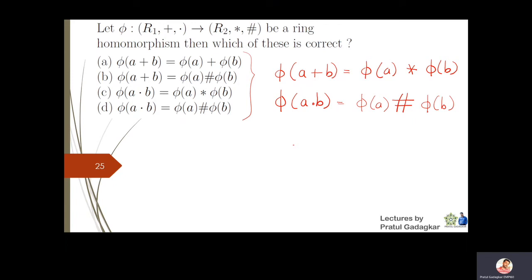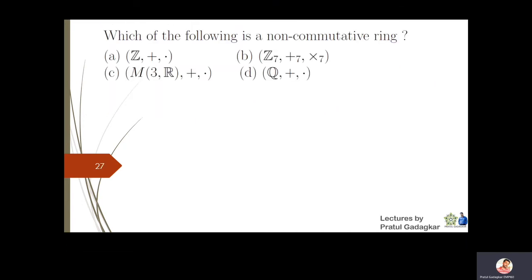Checking the options: the first has a mistake — it should use ★. The second has a mistake again. The third has a mistake — it should use #. The fourth option states φ(a·b) = φ(a) # φ(b), which is correct. So the fourth option is the answer.